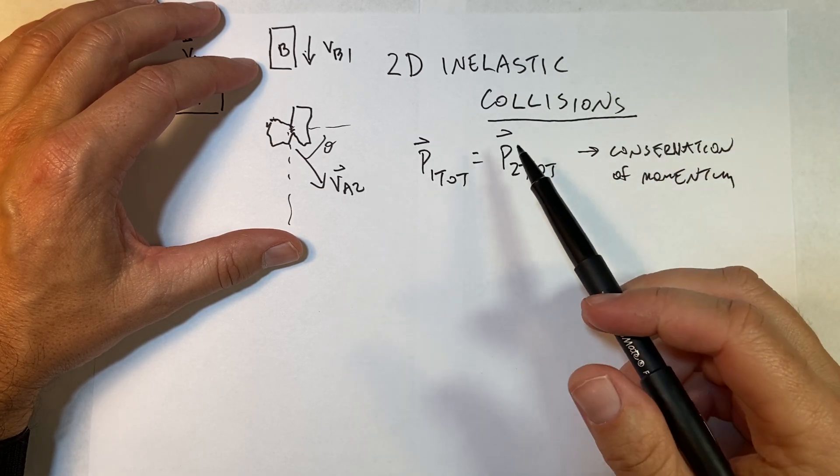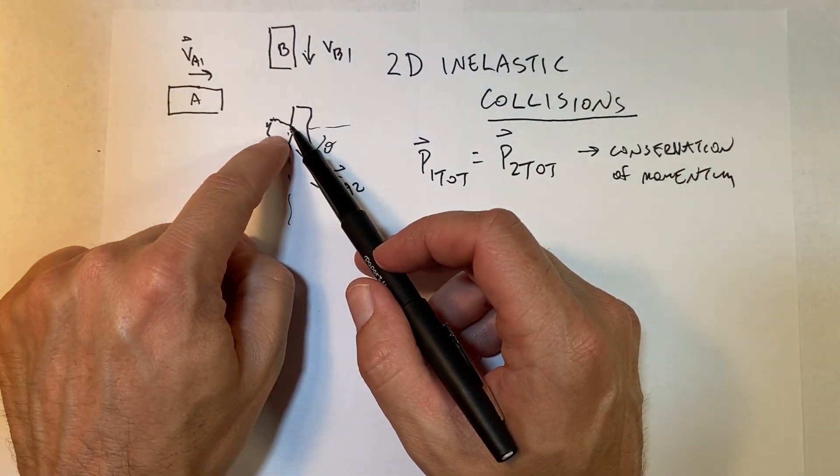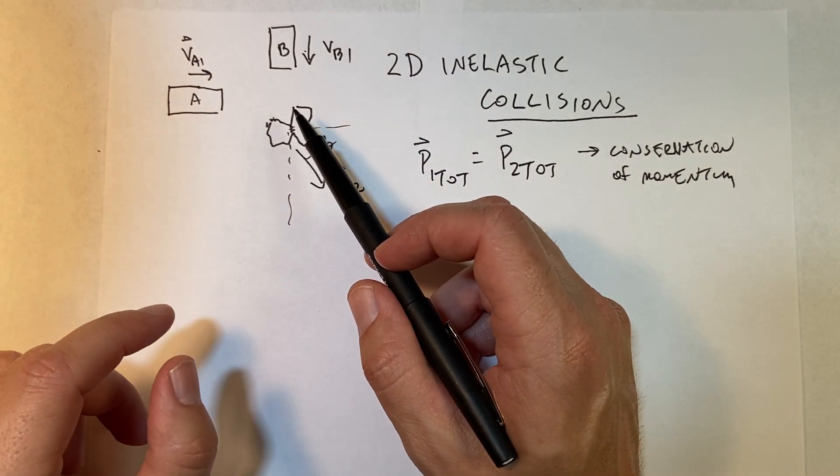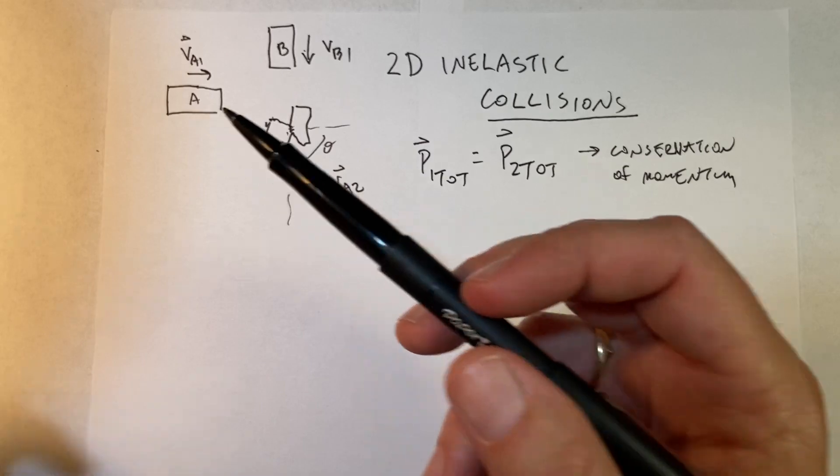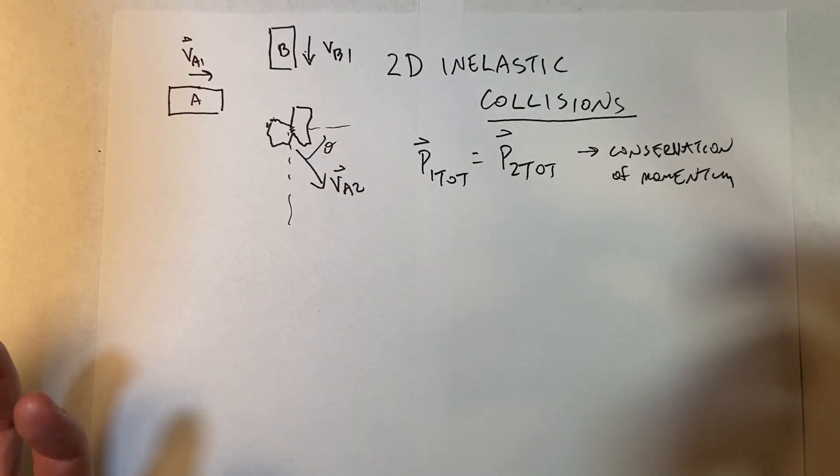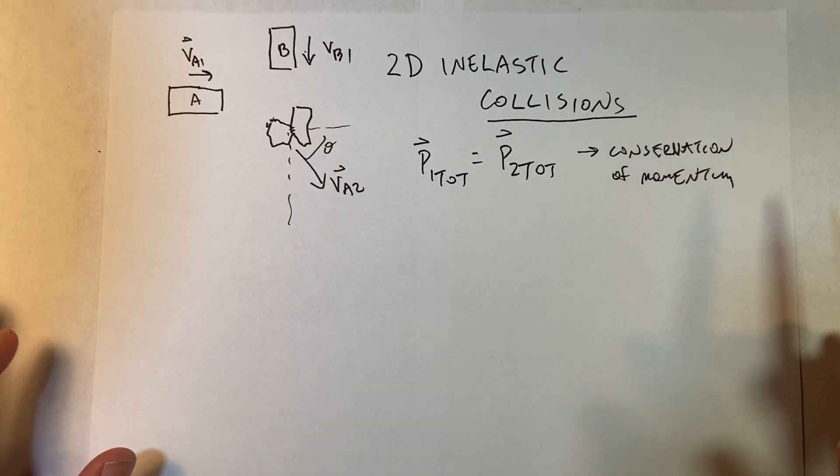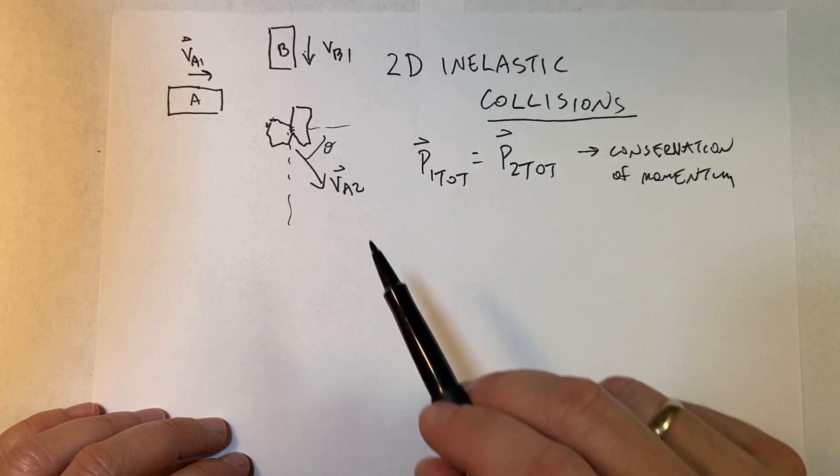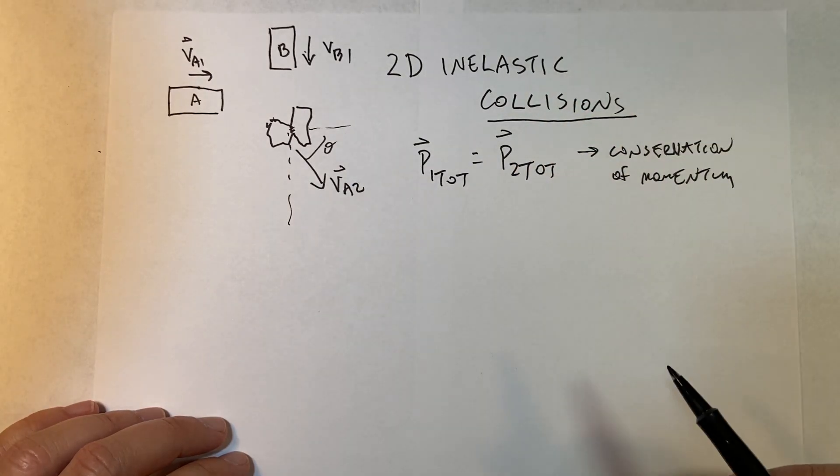And it basically comes from the momentum principle because the force of A on B is equal to the opposite of B on A, and they're for the same amount of time. So they have opposite change in momentum, which makes a total change in momentum zero. That's what we get. But that's another video that I did and you can go look at it down there—I'll link to it down there.